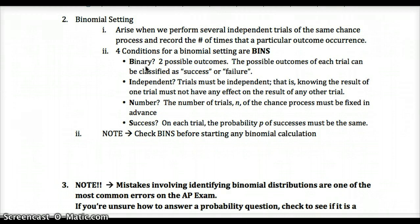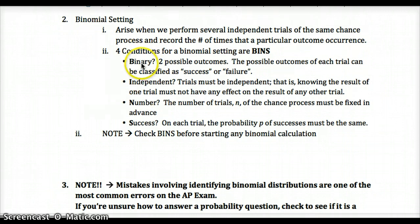N for Number: the number of trials of the chance process must be fixed in advance — you have to decide how many trials before you start. S for Success: the probability p of success must be the same on each trial, which also ties back to independence. The I and S are somewhat redundant but emphasize the same idea from different angles.